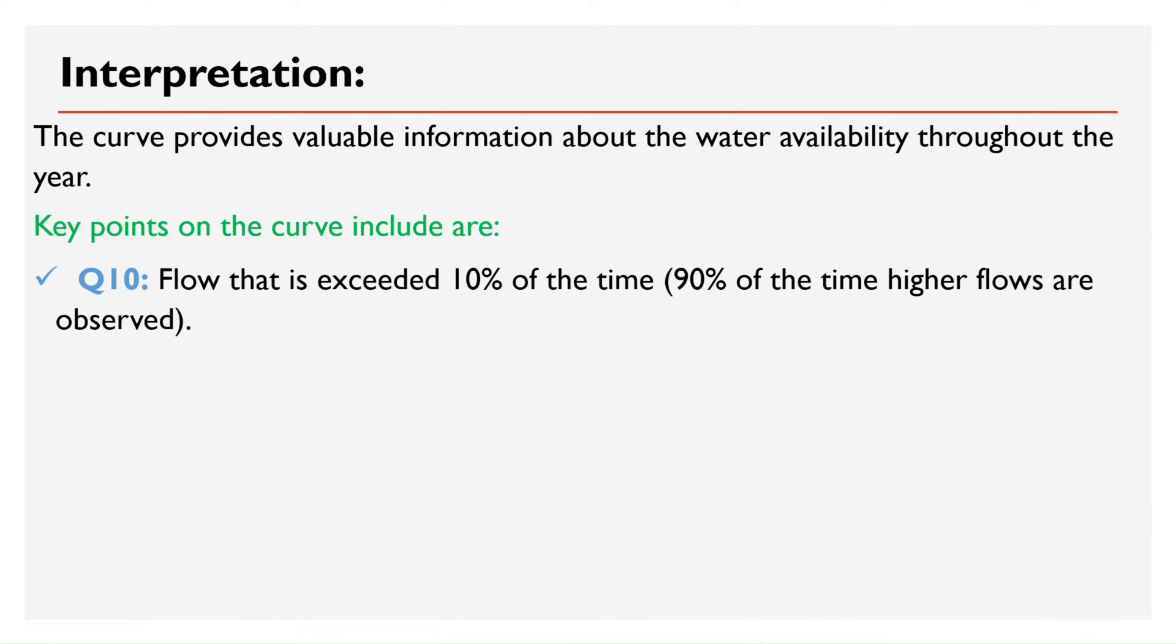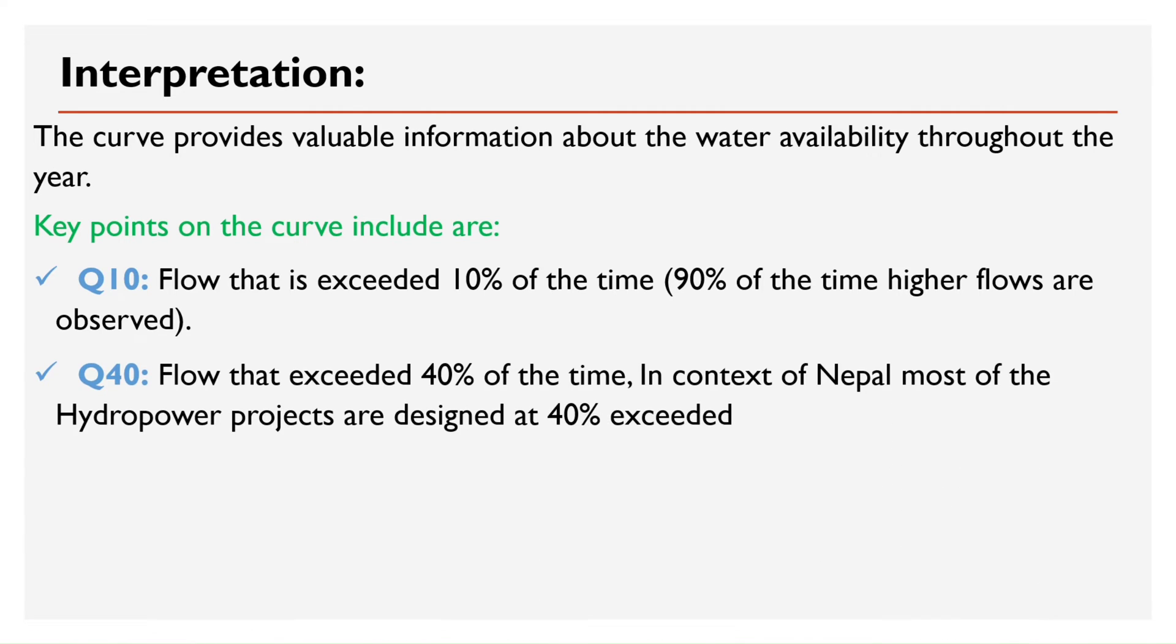Q10, flow that is exceeded 10% of the time. Q40, flow that exceeded 40% of the time. In context of Nepal most of the hydropower projects are designed at 40% exceeded.